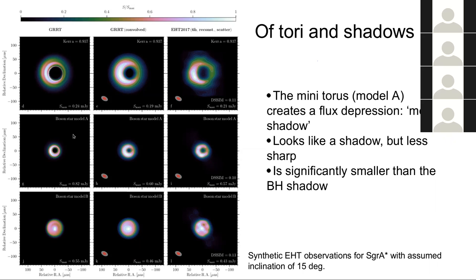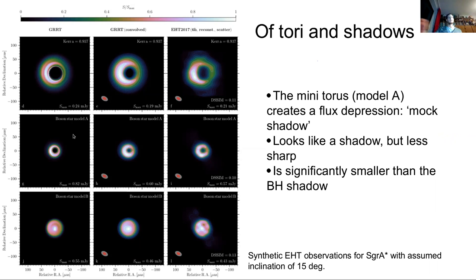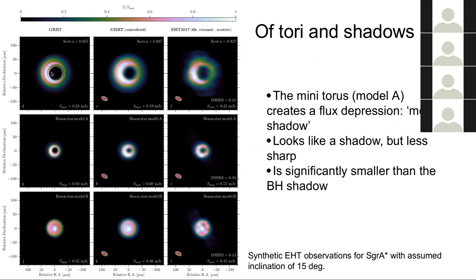If we see those features making almost circles. So for an inclination of 15 degrees. Here's a Kerr black hole. Nice black hole shadow. Accretion flow around it. But here's our boson star model A, which made this kind of mini torus. And that is of course looking very much like a black hole shadow. If you just were able to blow it up a bit by increasing the mass, for example. So this is for example why we need to know the mass quite precisely in order to say something about fundamental physics of gravity.